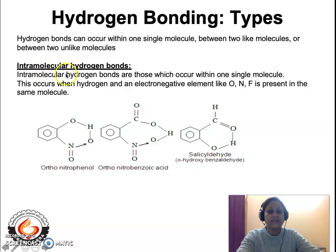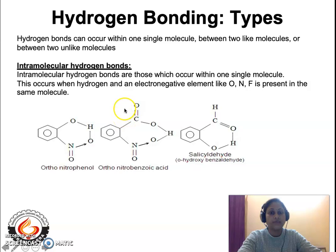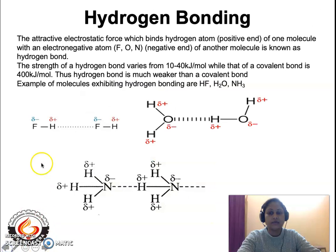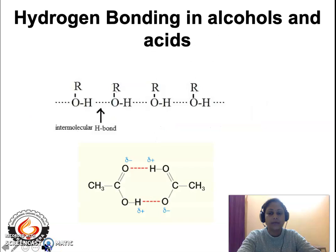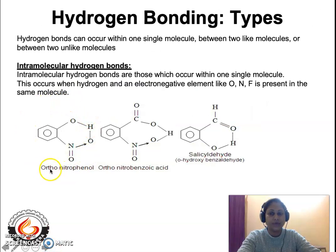Hydrogen bonding is of two types: intramolecular hydrogen bonding and intermolecular hydrogen bonding. Hydrogen bonding can occur within one molecule, or between two like molecules, or between two unlike molecules. If the hydrogen bonding exists within a single molecule, that is characteristic of intramolecular hydrogen bonding.